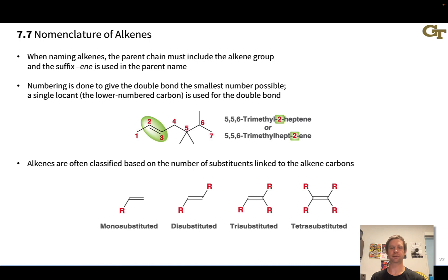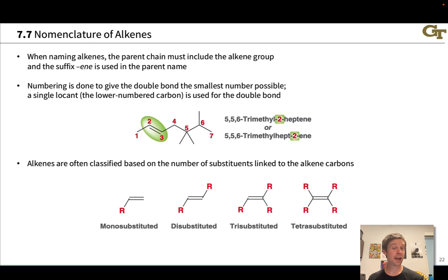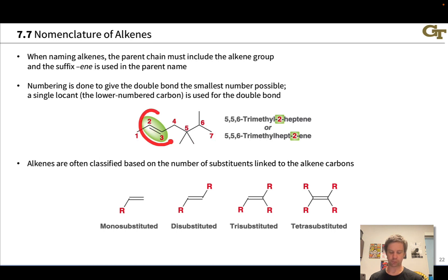For example, we have 5,5,6-trimethylhept-2-ene, with a methyl group here and two here, indicating a 7-carbon parent chain with a double bond between carbons 2 and 3.